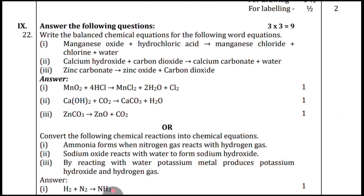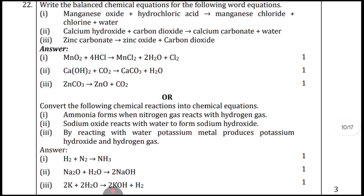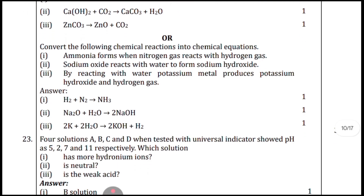Question twenty-two for three marks: write the balanced chemical equations. They are given in statement form and you have to convert them into molecular formula equations, including MnO₃ and other species. Part B: convert the following chemical reactions (given in statement form) into chemical equations. They need not necessarily be balanced, but you should write the equations.